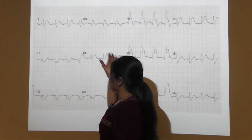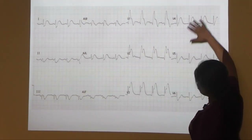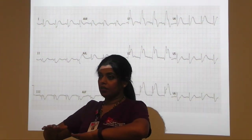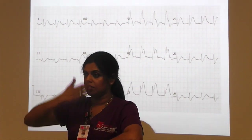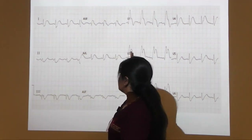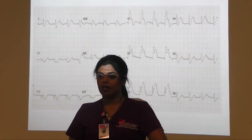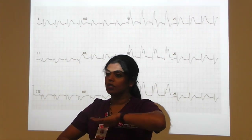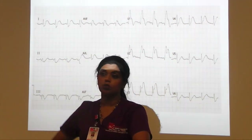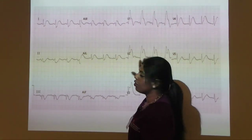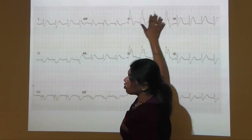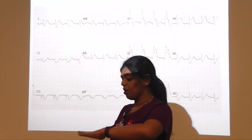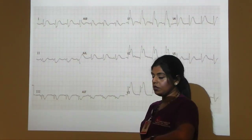Then you move on to the precordial leads. These six leads are in one plane — the horizontal plane — while the limb leads are in the vertical plane. These two planes don't interact with each other; there are no reciprocal changes between V1-V6 and the limb leads because they are in two different dimensions.